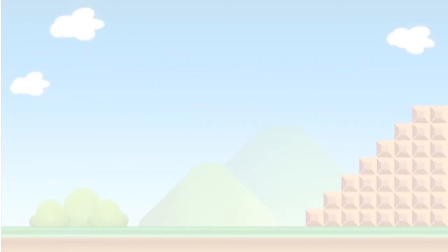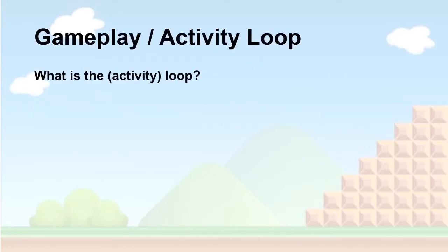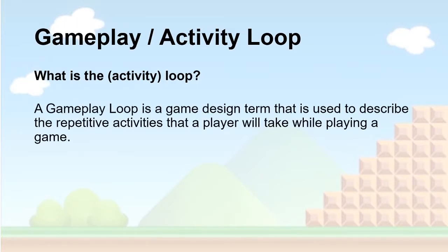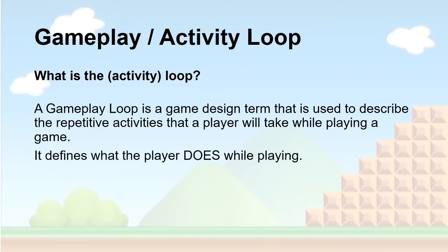The gameplay loop is a game design term used to describe the repetitive activities a player takes while playing a game. It defines, in essence, what the player does. In Mario, for example, you'd be moving as the character and collecting coins — that repetitive action is the gameplay loop.